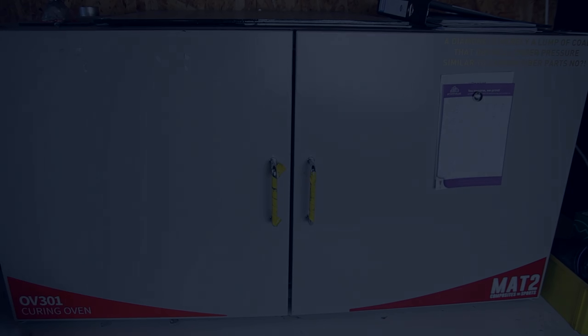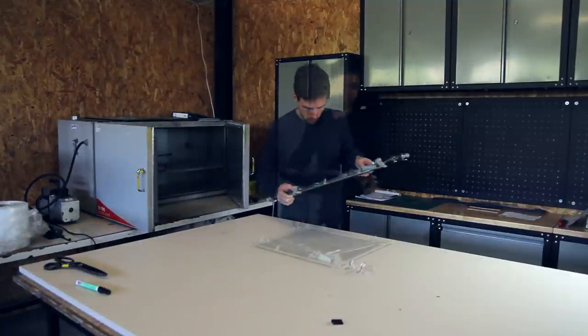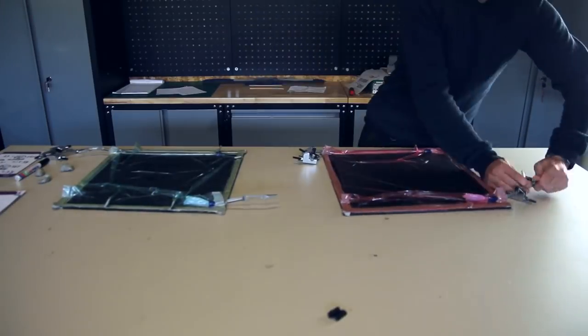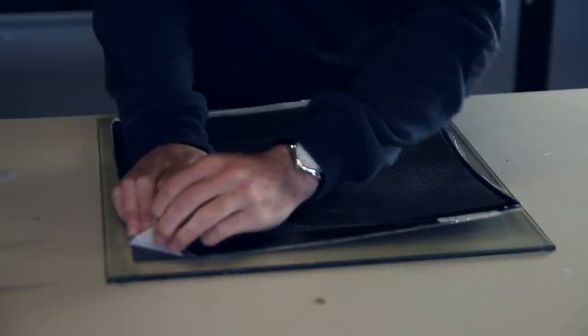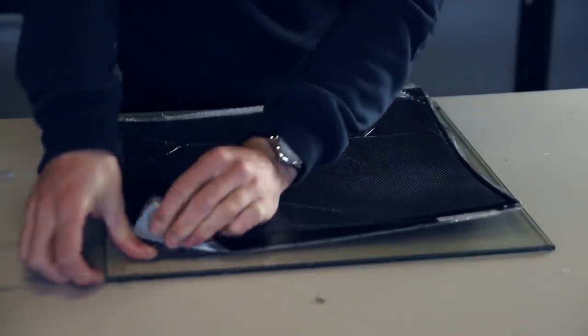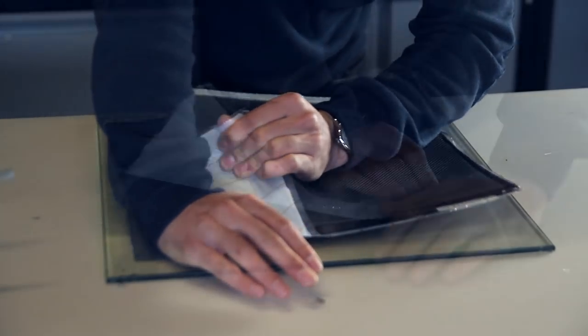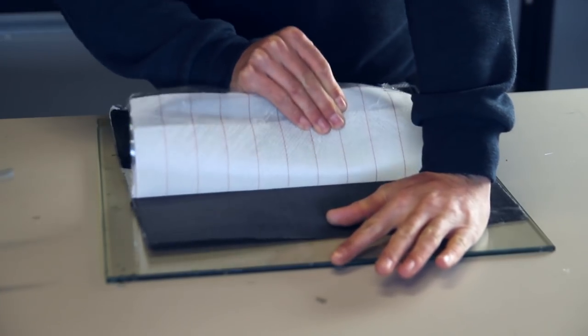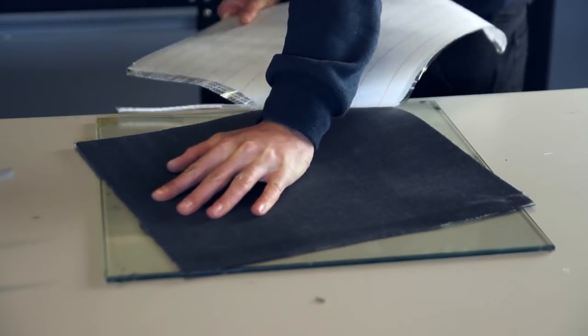Very important, and most people starting with composites forget about this, is that you have to do a post cure with epoxy resins. These two parts were post cured at around 50 degrees for around 7 or 8 hours, and this will ensure you have a properly cured epoxy that will not distort at any temperature under the curing temperature, which would be 50 degrees Celsius.